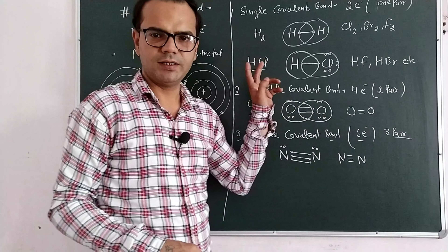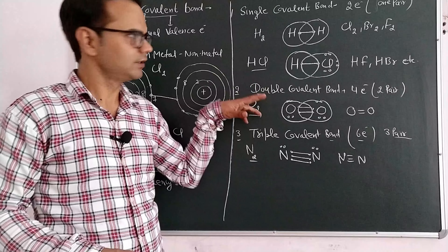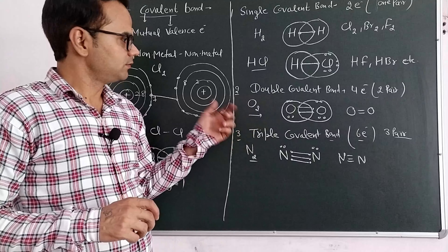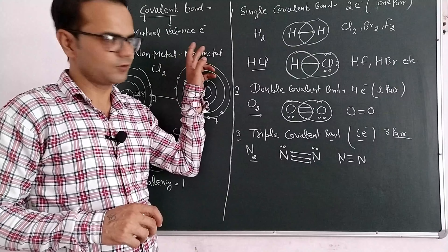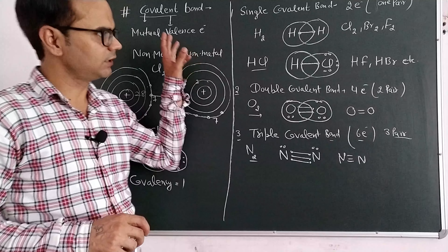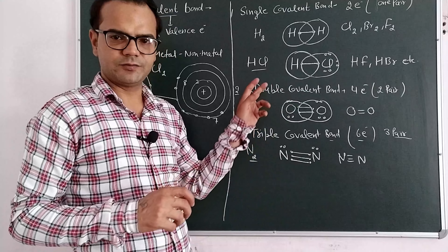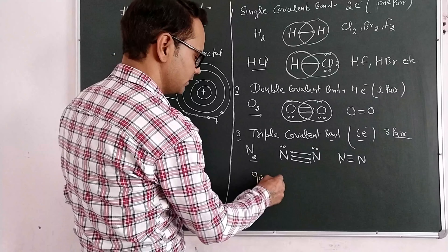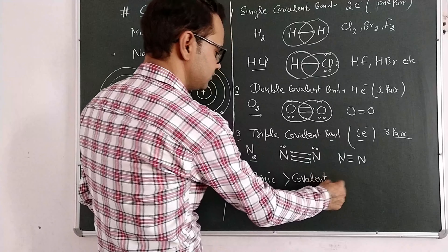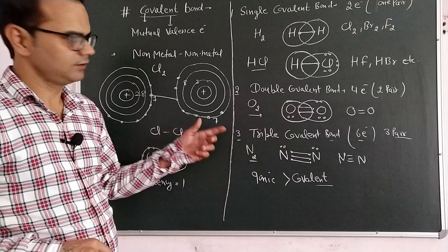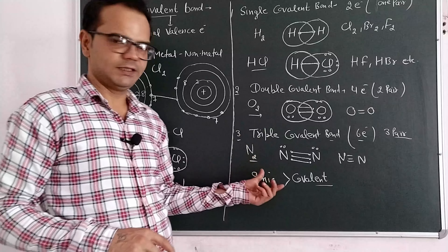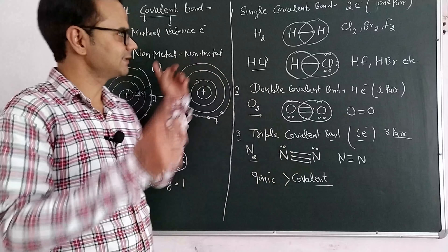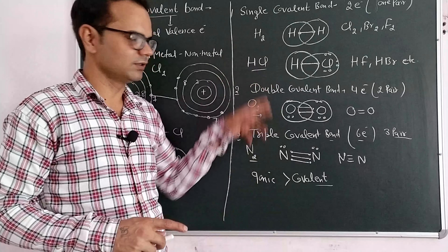This is just the opposite of ionic bond. In ionic bond there is a complete transfer of electrons, but in covalent bond there is only sharing of electrons. Comparing the strength, ionic has a strong force of attraction, making it a stronger bond. In covalent bond, since there is no complete transfer of electrons, it is slightly weaker than the ionic bond. In the next video, we will discuss the properties of ionic versus covalent compounds. That's it for covalent bond — I hope you understood it.